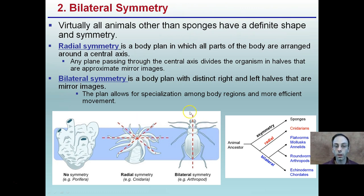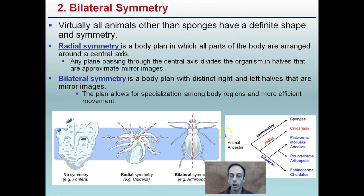Bilateral symmetry, on the other hand, is one distinctive plane of symmetry — a body plan with distinct right and left halves that are mirror images. This bilateral symmetry allows for specialization among body regions and more efficient movement. So bilateral symmetry would seem to be more advanced than radial symmetry. The progression goes: animal ancestor with asymmetry (sponges), then radial symmetry in cnidarians, then bilateral symmetry with distinct right and left halves and more efficient movement — considered more advanced.